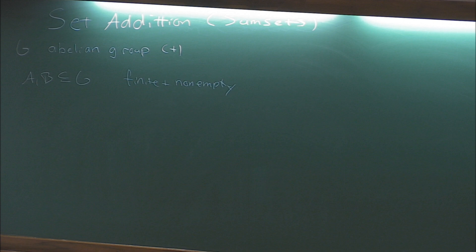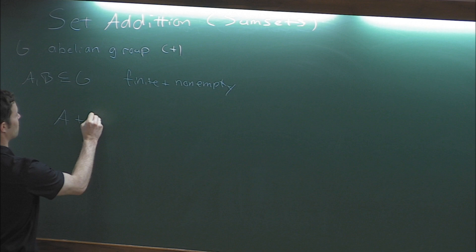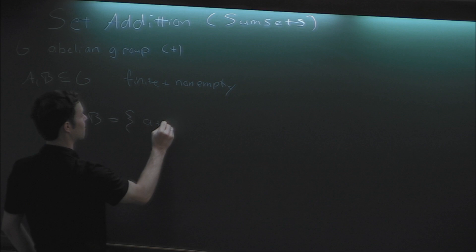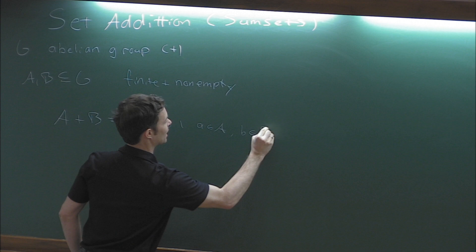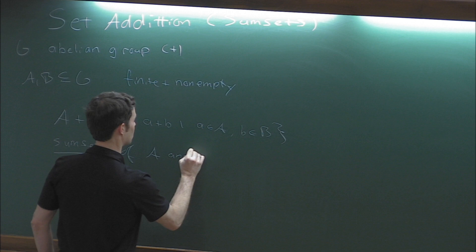We don't just study the sets themselves; we want to take advantage of the additive structure. So we define A+B - it's a very natural definition. We just take all possible sums, little a plus little b, with a living in big A, little b living in big B. This is called the sumset of A+B.